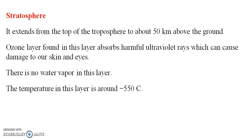The stratosphere extends from the top of the troposphere to about 50 km above the ground level. The ozone layer found in this layer absorbs harmful ultraviolet rays which can cause damage to our skin and eyes. There is no water vapor in this layer. The temperature is around minus 57 degrees. The ozone layer is very important as it blocks ultraviolet rays which can cause skin disease.